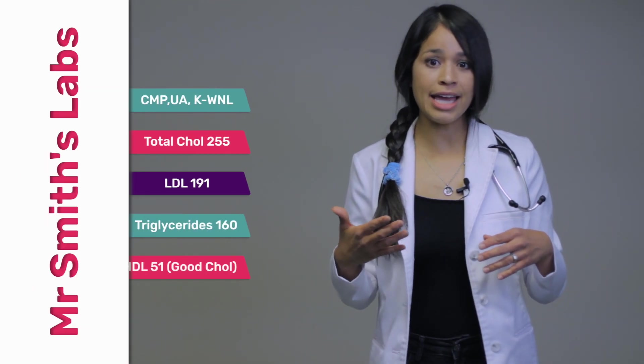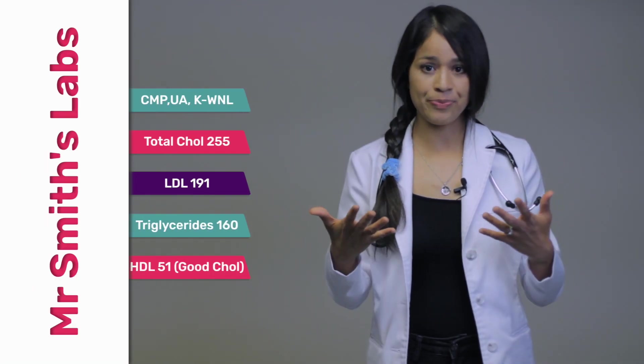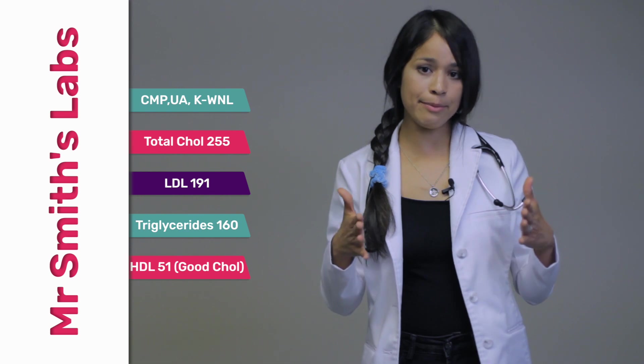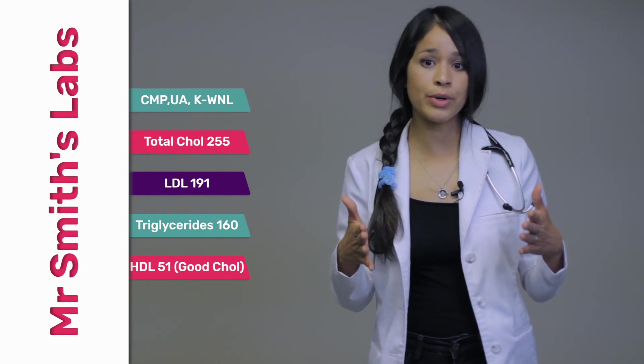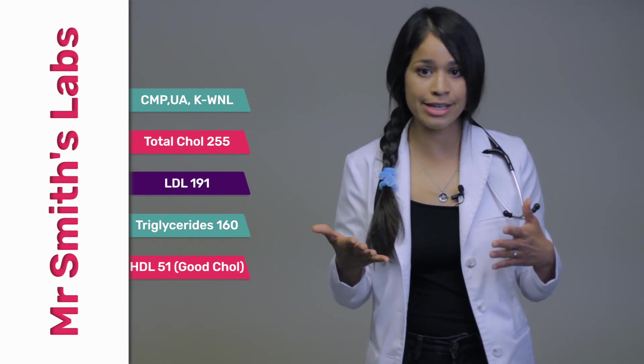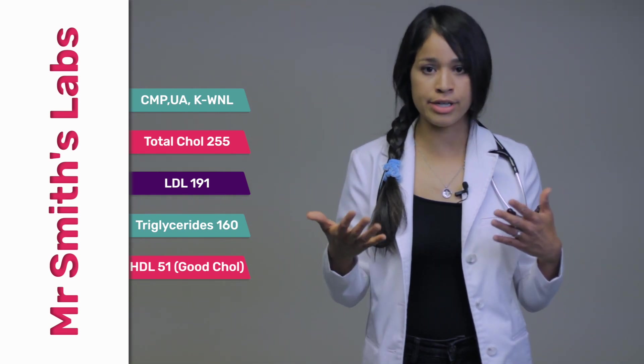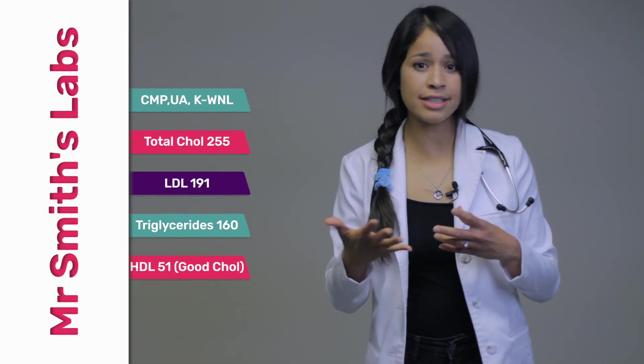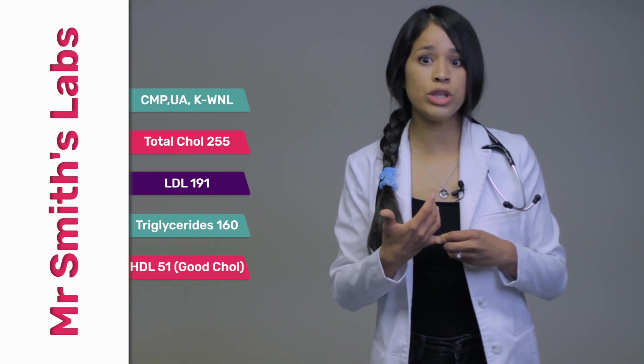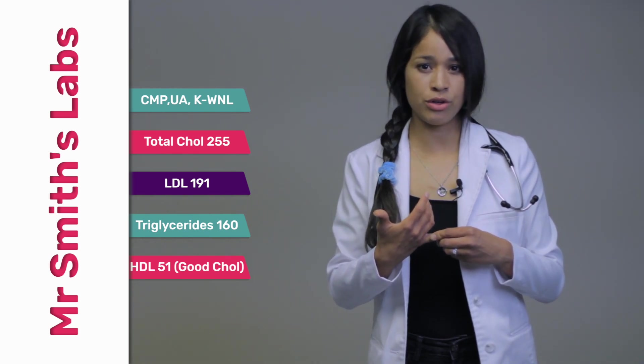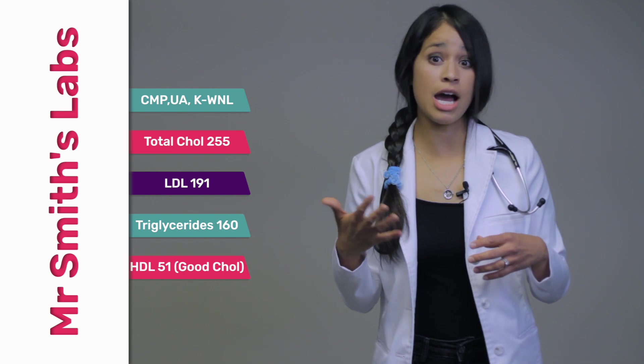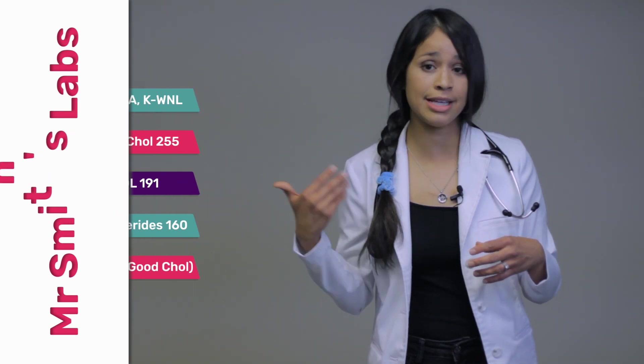So the lab report comes back and this is what you see. I put in bold what is abnormal. As far as what is abnormal, his total cholesterol is 255. Normal is less than 200. His LDL, which is his bad cholesterol, is 191 with normal being less than 130. And his triglycerides are 160 with normal being less than 150.